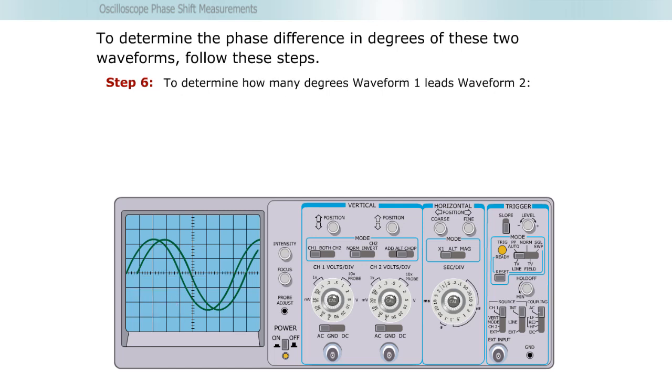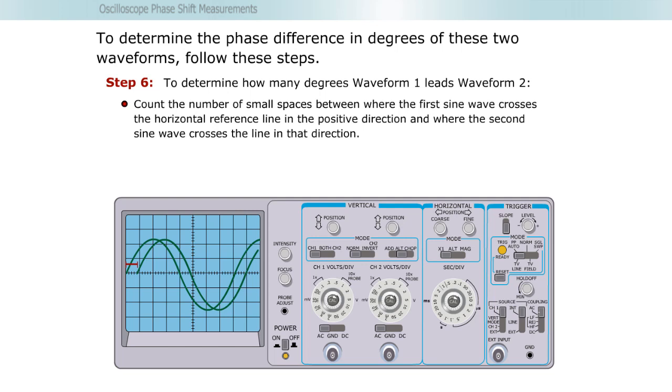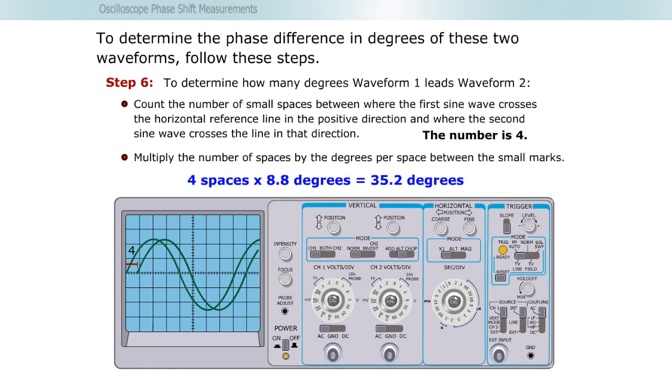Step six, to determine how many degrees waveform one leads waveform two, count the number of small spaces between where the first sine wave crosses the horizontal reference line in the positive direction and where the second sine wave crosses the line in that direction. The number is four. Multiply the number of spaces by the degrees per space between the small marks. Four spaces times 8.8 degrees equals 35.2 degrees.